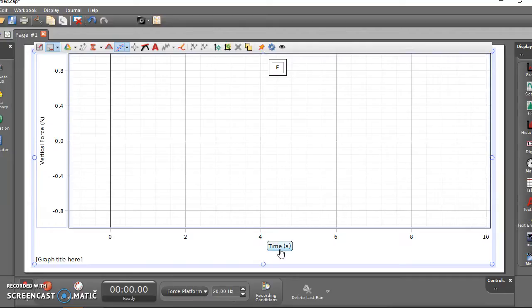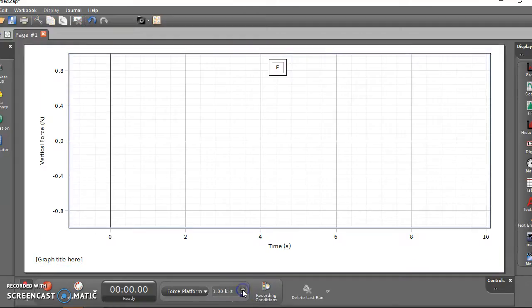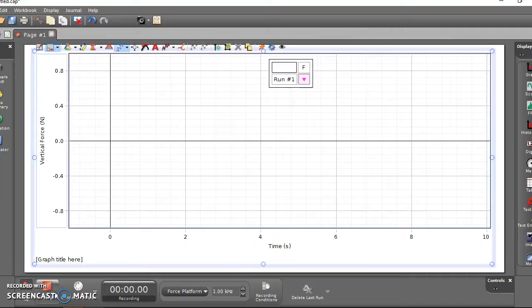You should have zeroed out the scale. When you're ready to collect data, you can go ahead and click—wait, I want to change this to 1,000 hertz, or 1 kilohertz. And then we'll click record.